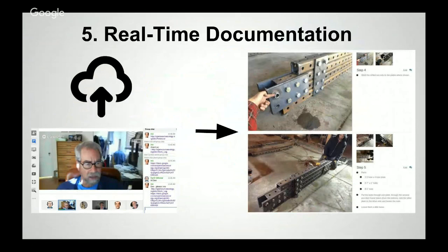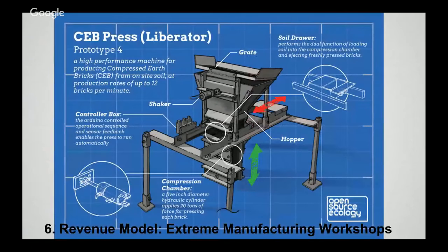We also achieved real-time documentation in this whole process. When we were building the iron worker machine, we had a team of people listening in on a Google Hangout just like we are right now. They were observing what we were doing, we were uploading pictures and videos. By the end of the build, a remote team had produced an instructional step-by-step guide and a video the next day. We've achieved real-time documentation because information gets lost otherwise — you want to document it in real-time as much as possible.